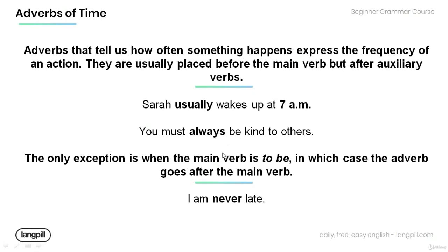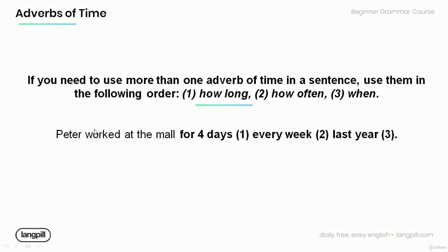There is an exception: when the main verb is 'to be,' the adverb goes after the main verb. Have a look at the example: 'I am never late.' Note that the adverb of time 'never' comes after the main verb 'to be' — 'I am.'